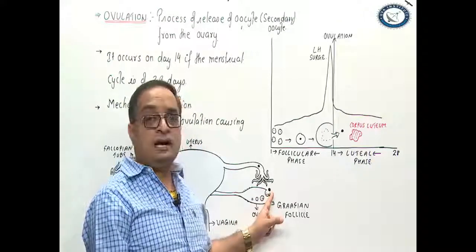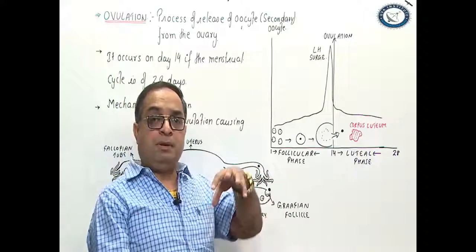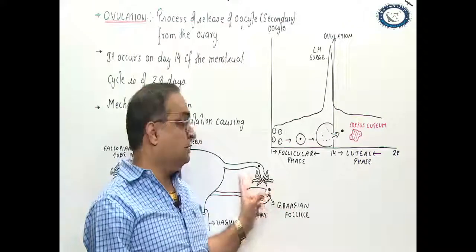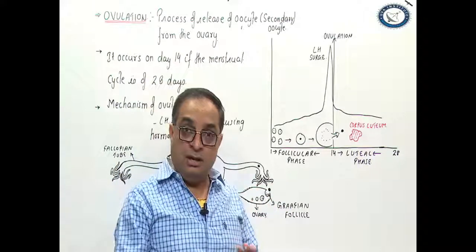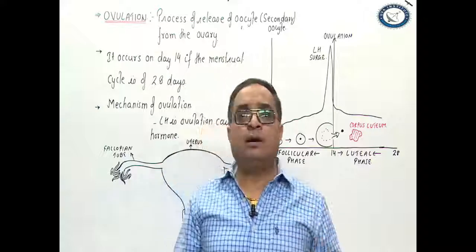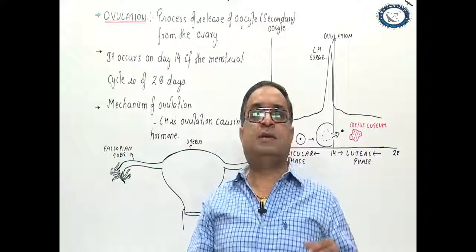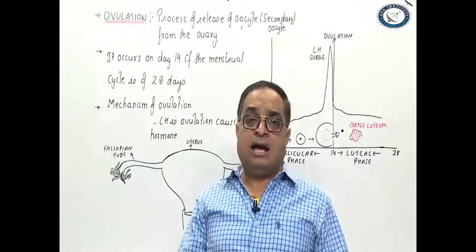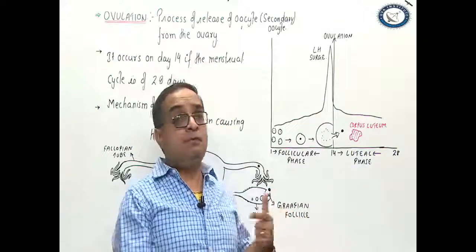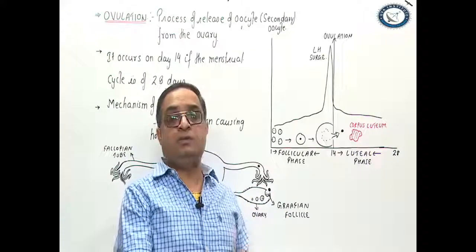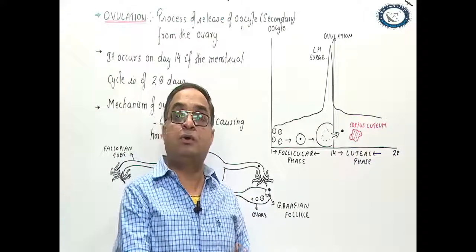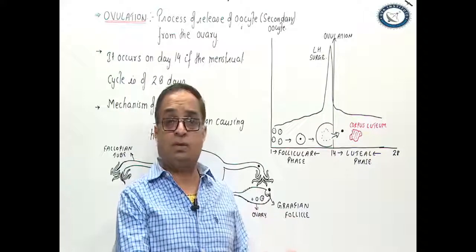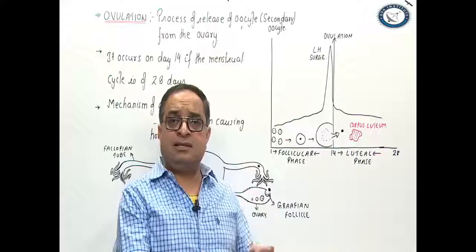Sometimes the released oocyte may not enter the fallopian tube. The fimbriae fail to capture it and it is lost in the body cavity, where it is destroyed by phagocytes. The survival time is 24 hours. Even in the fallopian tube, if it is not fertilized by a sperm, the secondary oocyte is destroyed by phagocytes without leaving any trace. Survival time is just 24 hours; after that it is a dead cell.